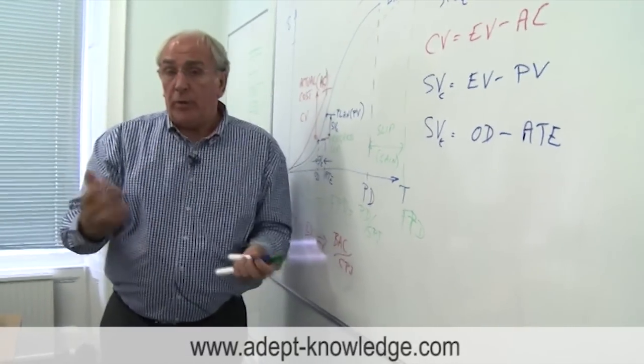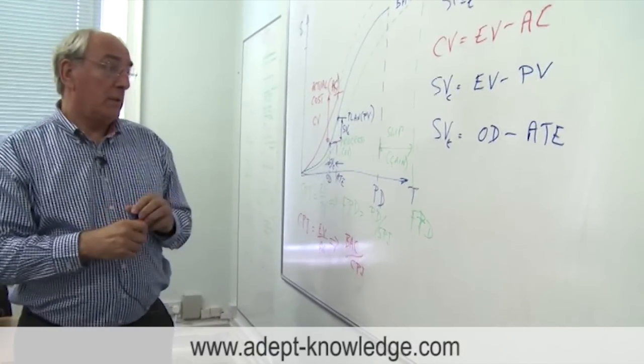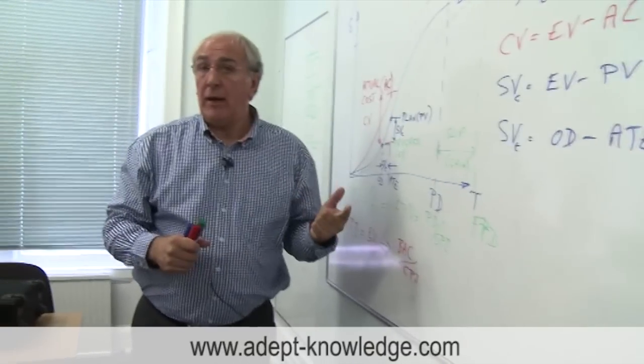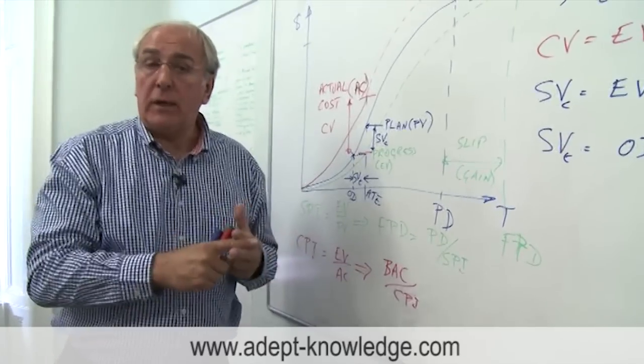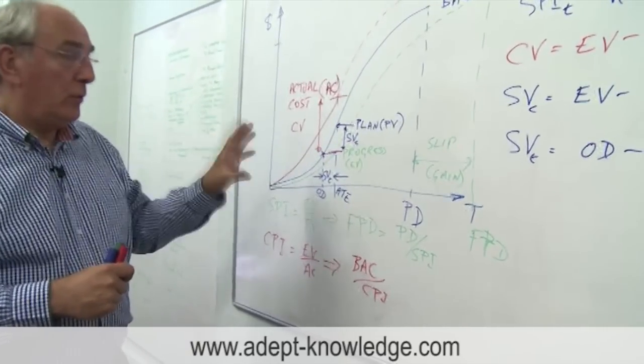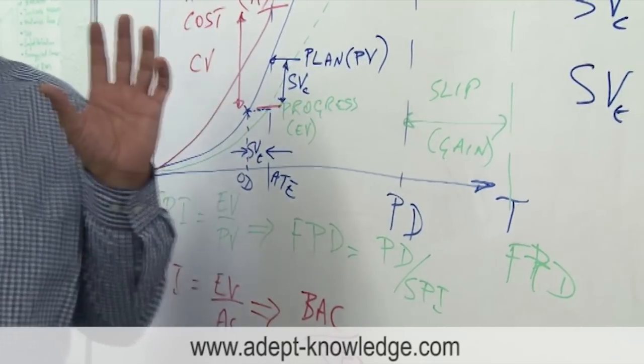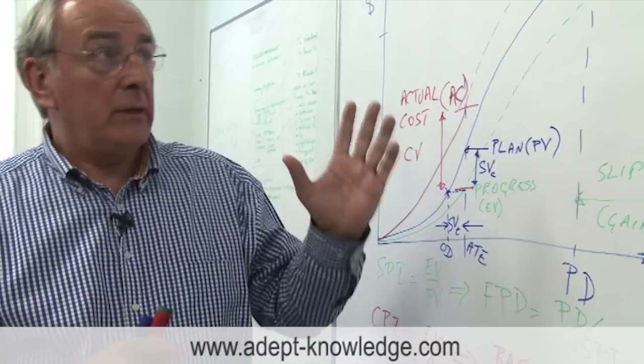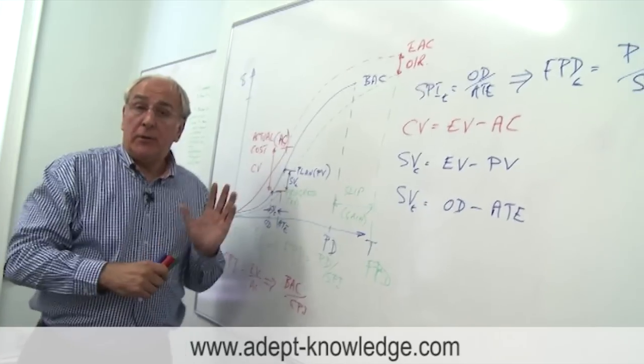So we've ended up with the three vital groupings of information. The first three are the earned value, the progress compared to the plan value, and then we've monitored the actual cost. So those three are the building blocks, that's the information at time now. What we can do from there is use them to find the most important things, which are the forecasts of where we're likely to go if things carry on this way. Those were the estimated completion and the forecast project duration.